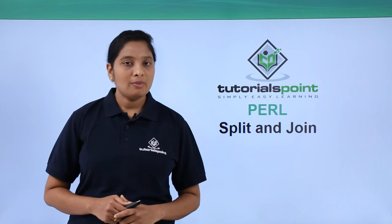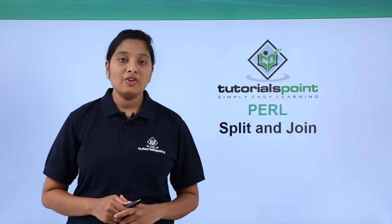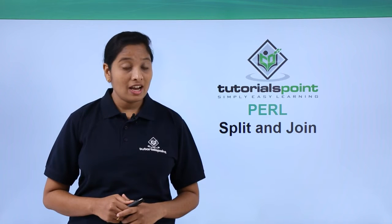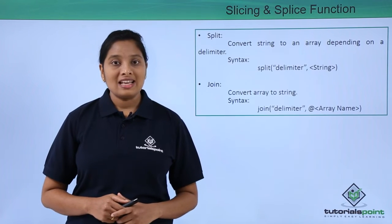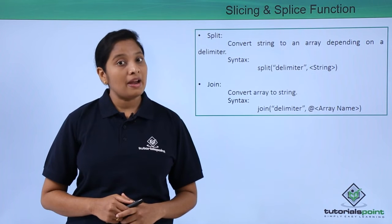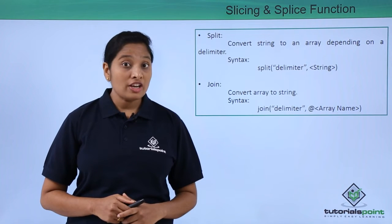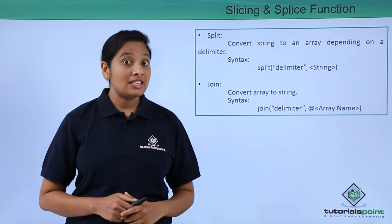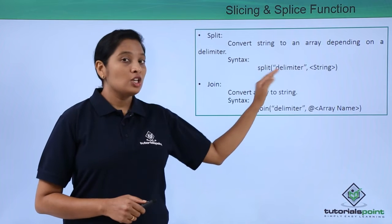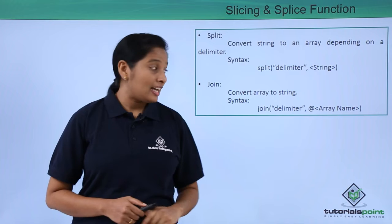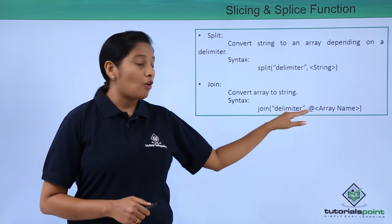Hello friends, welcome to Tutorials Point. In this video I'm going to explain two important functions used in arrays: split and join. The split function converts a string to an array depending on the delimiter. The join function converts an array to a string depending on the delimiter. The syntax of the split function is the delimiter followed by the string, and the join function syntax is the delimiter followed by the array name.